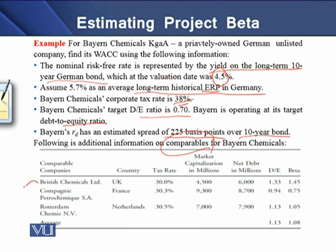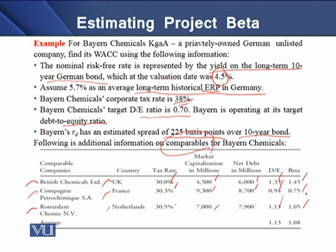There are three comparable companies from three different countries, each with different tax rates, market capitalizations, and debt amounts, resulting in different debt-to-equity ratios and different beta values. When we average the debt-to-equity ratios of the three companies, we get an average debt-to-equity ratio of 1.13. Similarly, averaging the three beta values gives an average beta of 1.08 for the comparable companies.